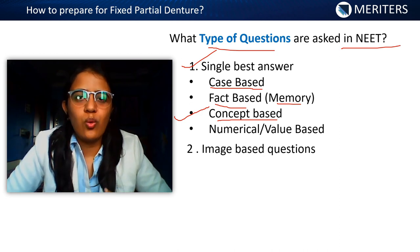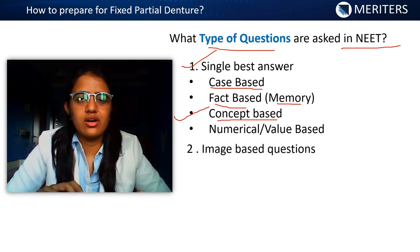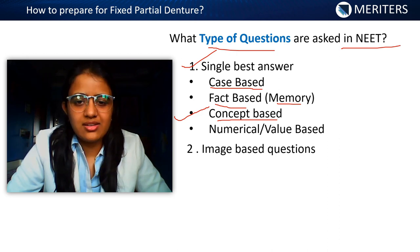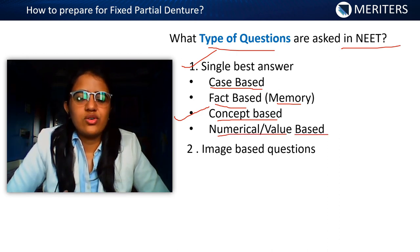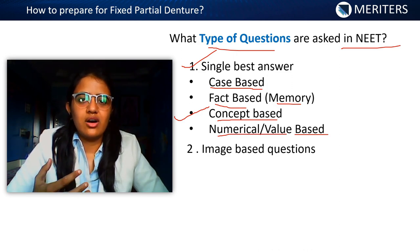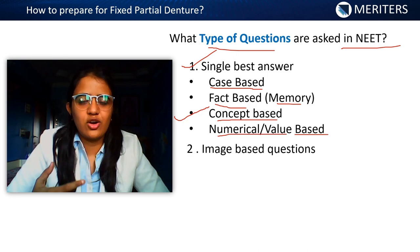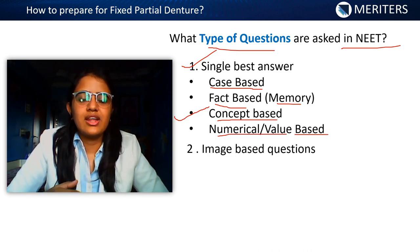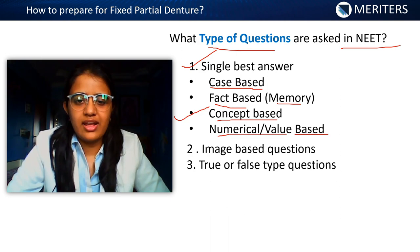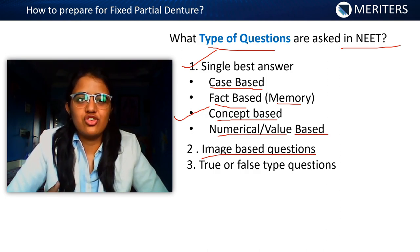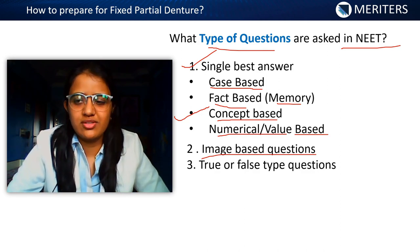Concept-based questions focus on principles of tooth preparation: what factors increase or decrease retention, when resistance is compromised, structural durability, and required axial reduction. Numerical value questions may ask how much tooth reduction is needed from the labial or lingual side for a full metal crown, or the measurement for an occlusal bevel or incisal offset, or the percentage concentration used in chemical gingival retraction. Image-based questions may show a telescopic crown, tilted abutment, three-quarter crown, or retention grooves.